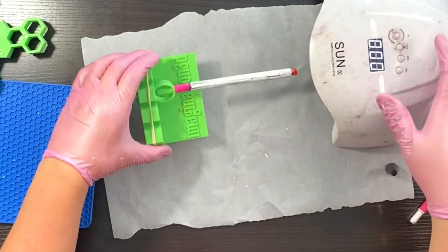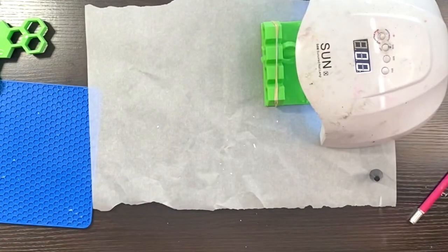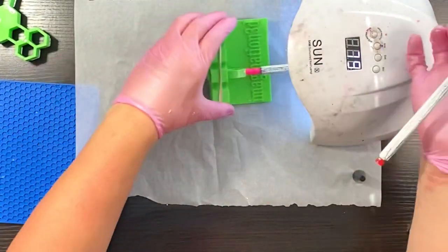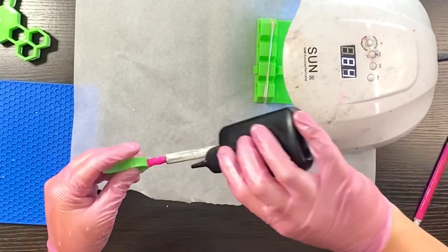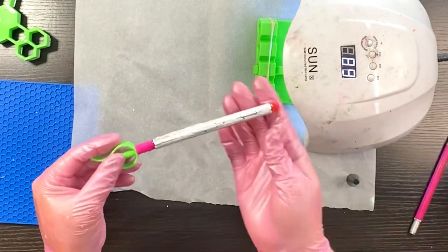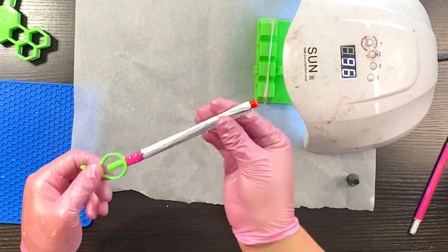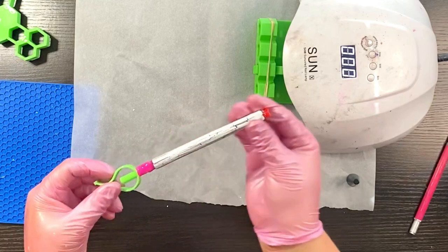Let it cure under that light for three minutes and then I'm going to add an additional thin coat just to make sure it is a hundred percent smooth and you don't feel any of those crackle ridges before I move on to my decals.